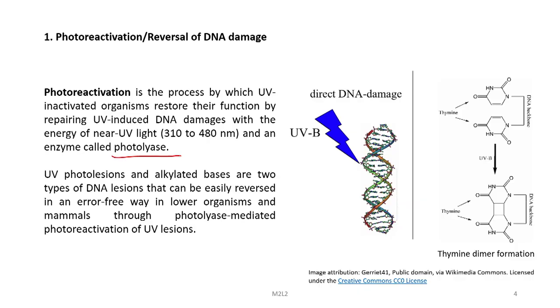Let us start with the first type of repair used by the cell whenever DNA is broken — photo reactivation or reversal of DNA damage. Photo reactivation is a process by which UV-inactivated organisms restore their function by repairing UV-induced lesions using the energy of near UV light, which is 310 to 410 nanometers, with the help of an enzyme called photolyase. UV photolyase and alkaline bases are two types of DNA lesions that can be easily reversed in an error-free way in lower organisms and mammals through photolyase-mediated photo reactivation.